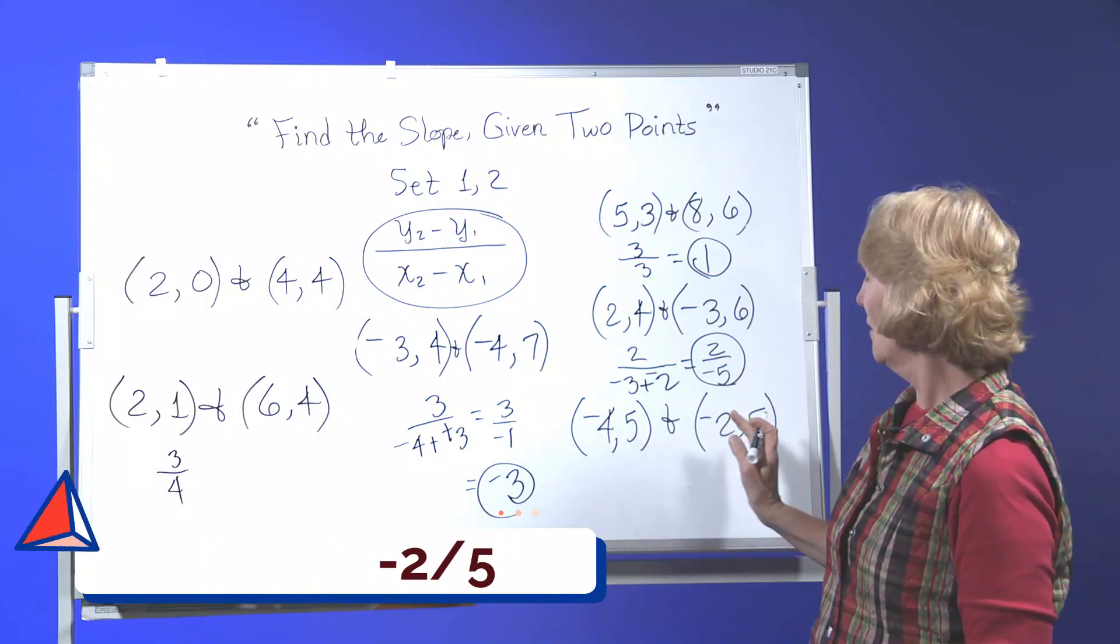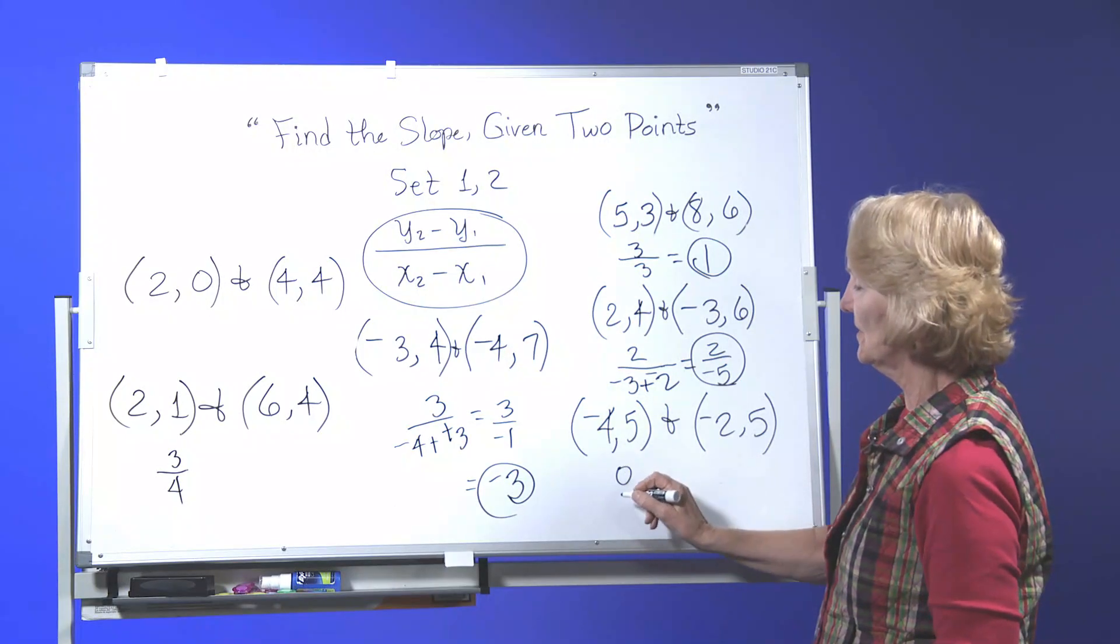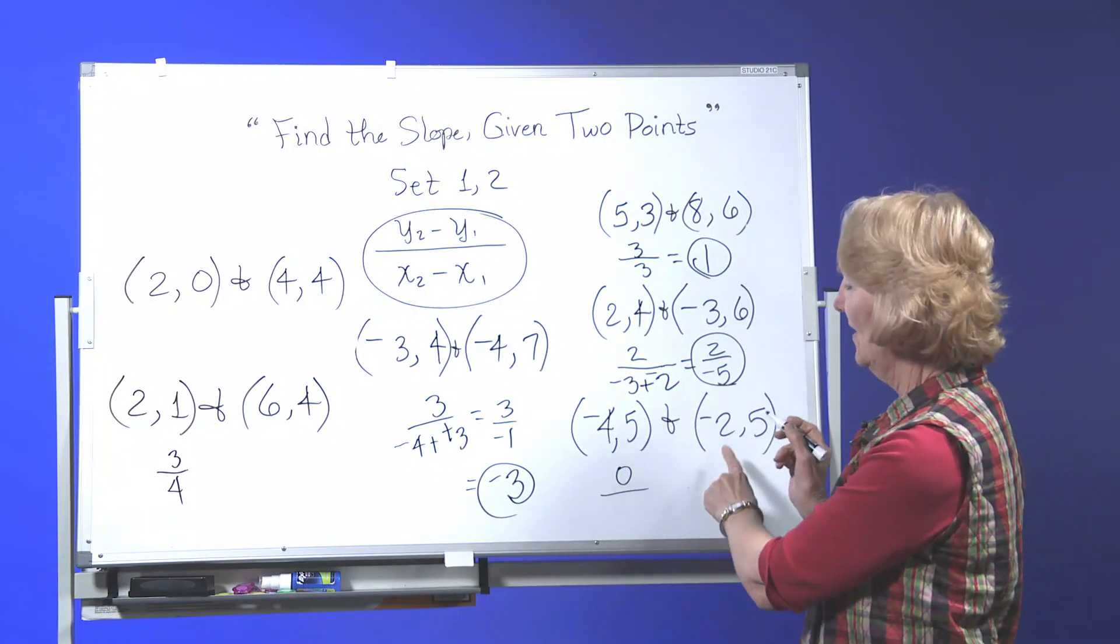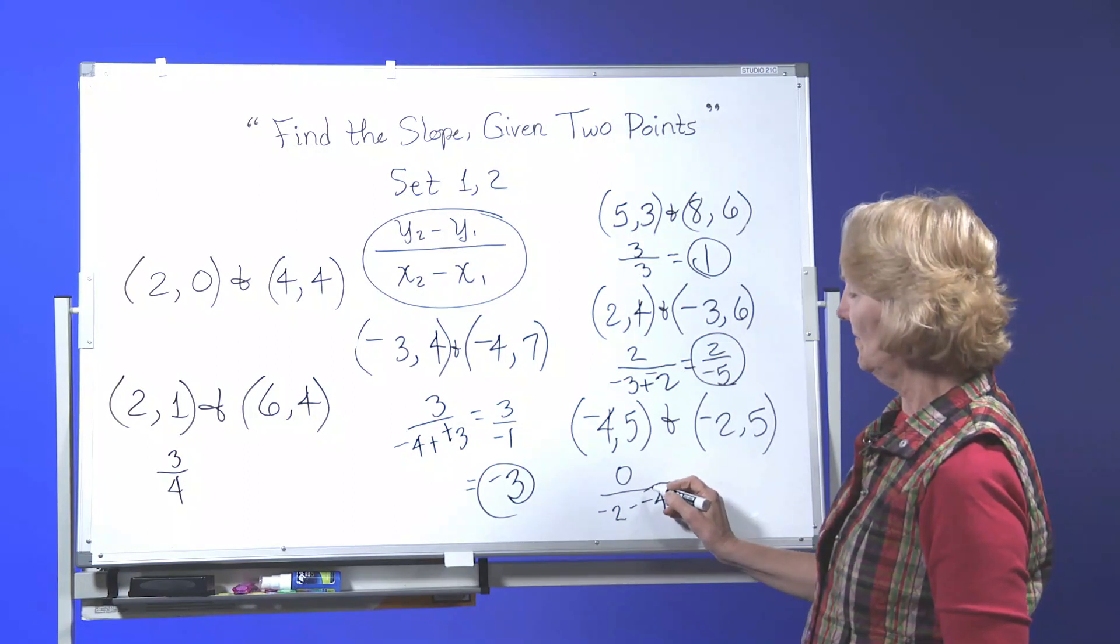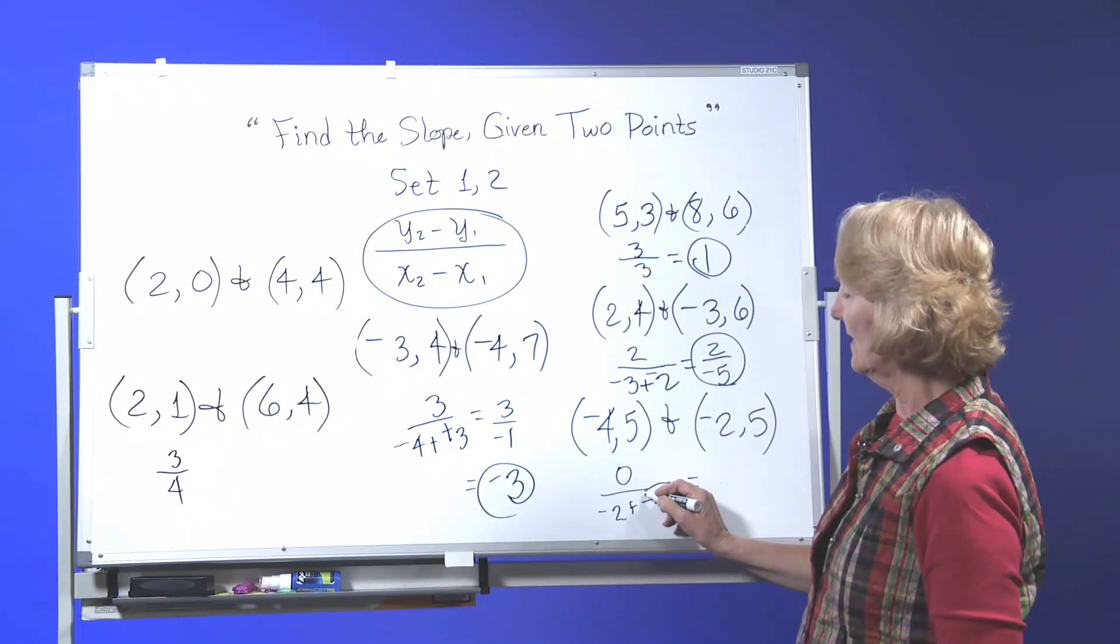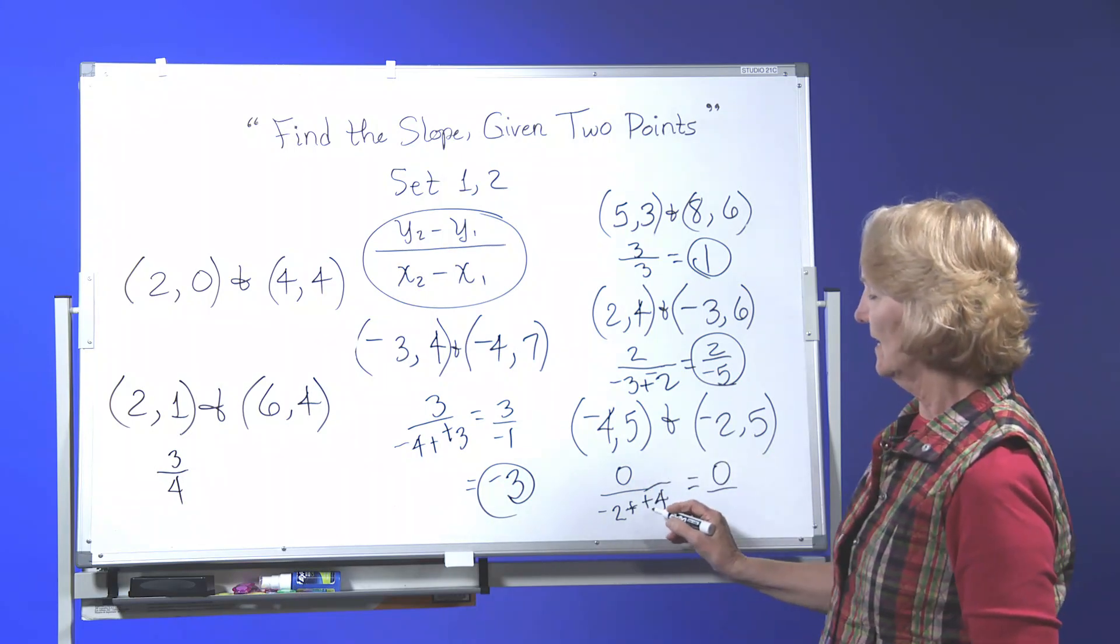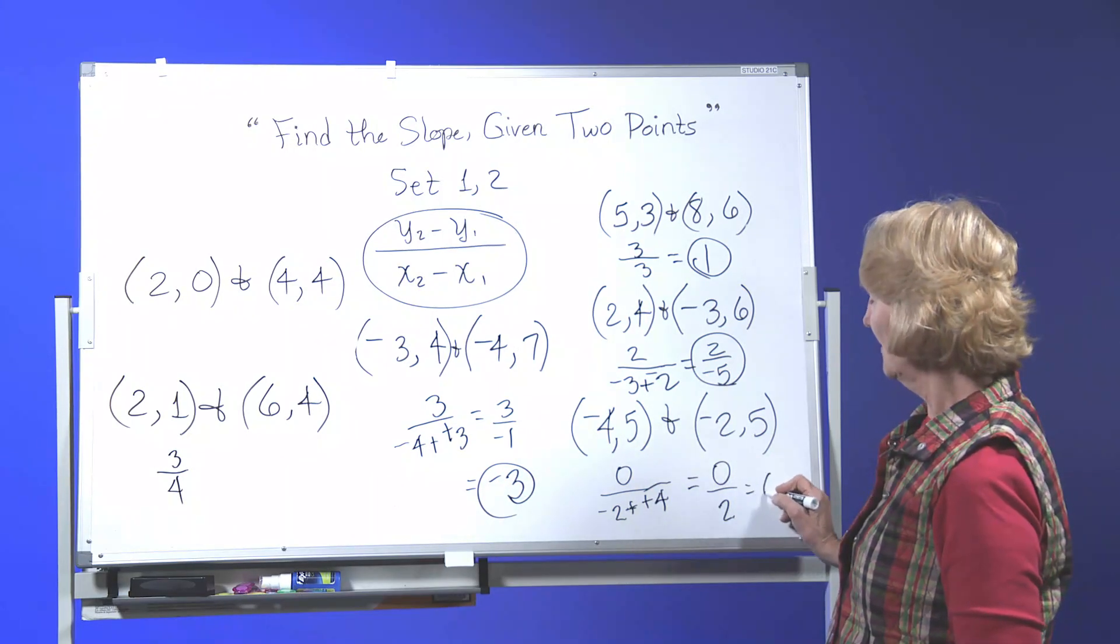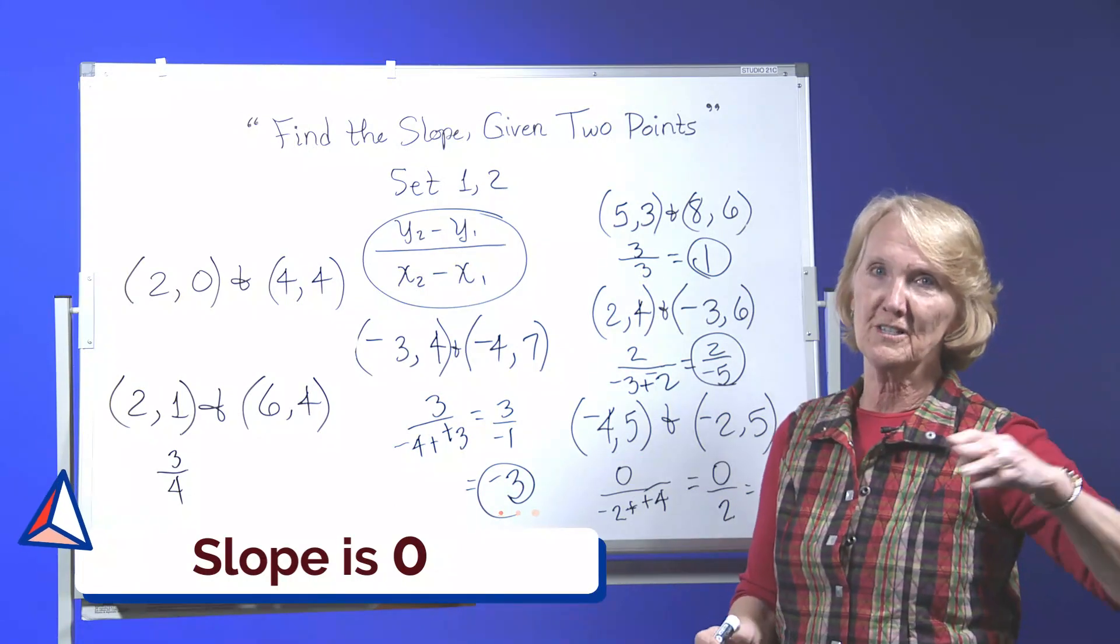Next one, we start with y2 minus y1 which is 0, 5 minus 5. And then negative 2 minus negative 4. Subtraction of a number is just like adding the opposite. 0 over anything is going to be 0. So you can have a slope of 0. It just means it's a horizontal line.